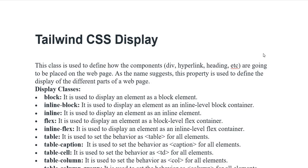Assalamu alaikum everyone. Today's video I am going to discuss Tailwind CSS display. This class is used to define how the component's division, hyperlink, and headings are going to be placed on the web page. As the name suggests, this property is used to define the display of the different parts of the web page.